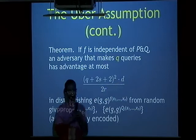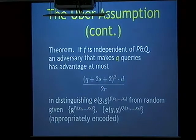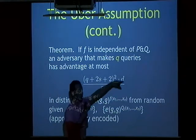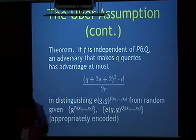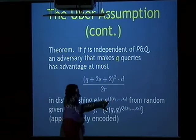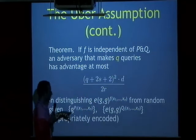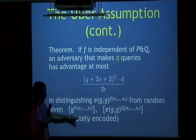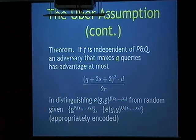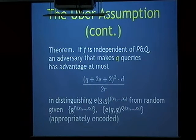This looks essentially the same as what we computed before: previously we had (q+5)² and degree d was set to 2. The advantage is in distinguishing e(g,g)^(F polynomial) from random, given the p_i polynomials in G and q_i polynomials in GT, all with the right exponents. Here r is just a typo for p — it denotes the order of the group.